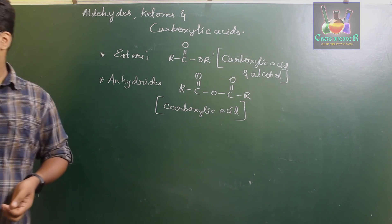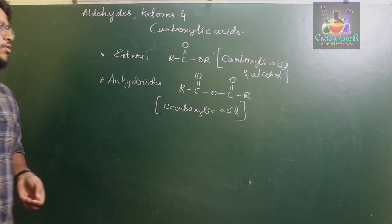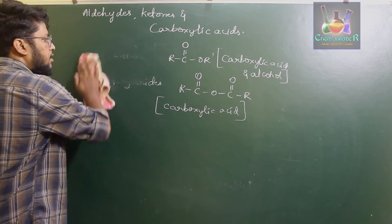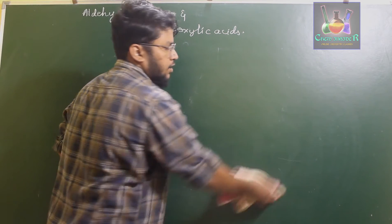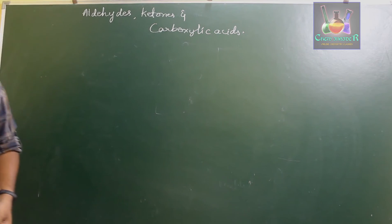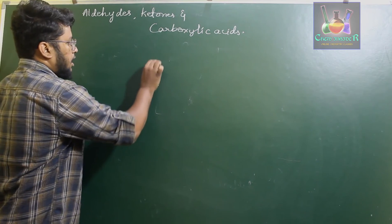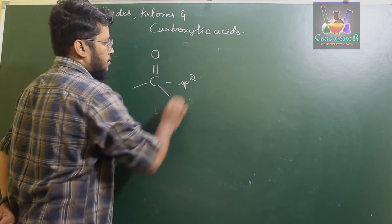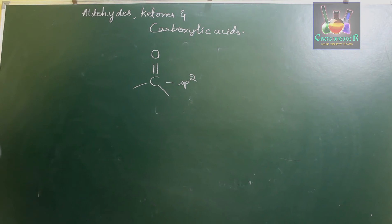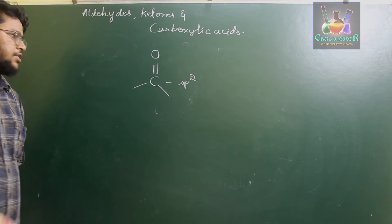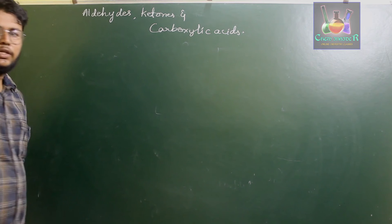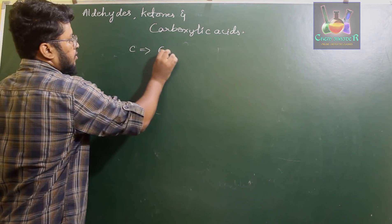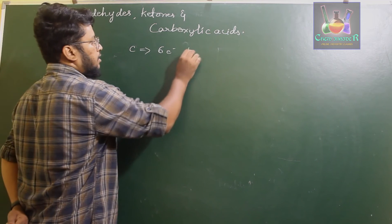Next, we need to understand the geometry and shape of the carbonyl group in an organic compound. The carbonyl carbon is sp2 hybridized, and as we know, sp2 hybridized carbon is planar in nature. If we write the electronic configuration of carbon — which has six electrons — it is 1s², 2s², 2p².